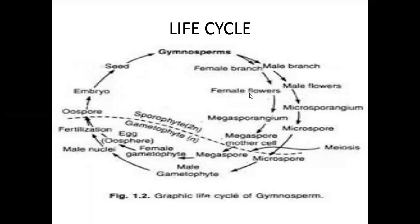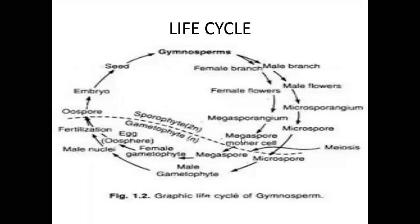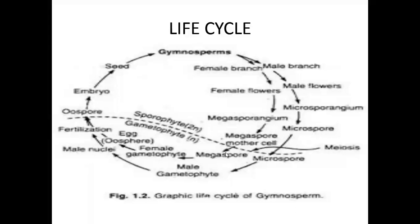From the female flowers or female cone, a megasporangium is developed. From the megasporangium, megaspore mother cells participate in reduction division and develop into megaspores.